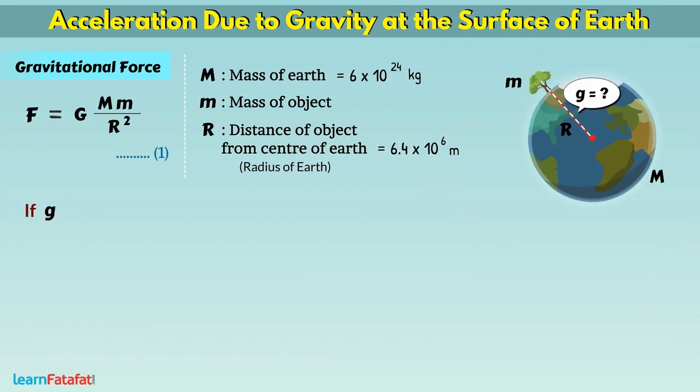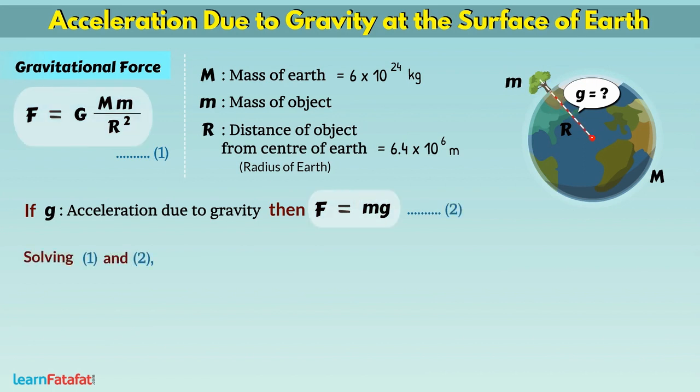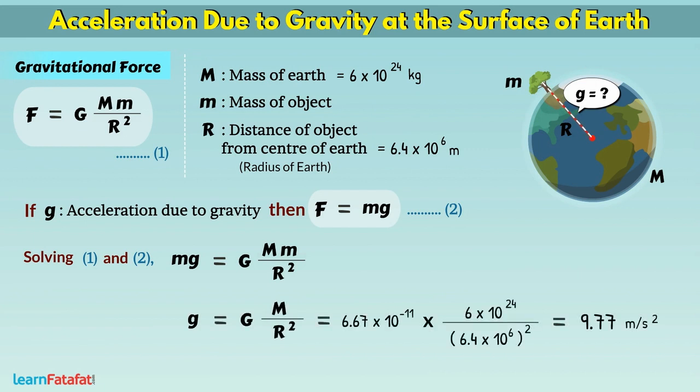If g is the acceleration due to gravity, then gravitational force can also be given as F is equal to mg. By solving equations 1 and 2, we get g is equal to 9.77 meters per second square.